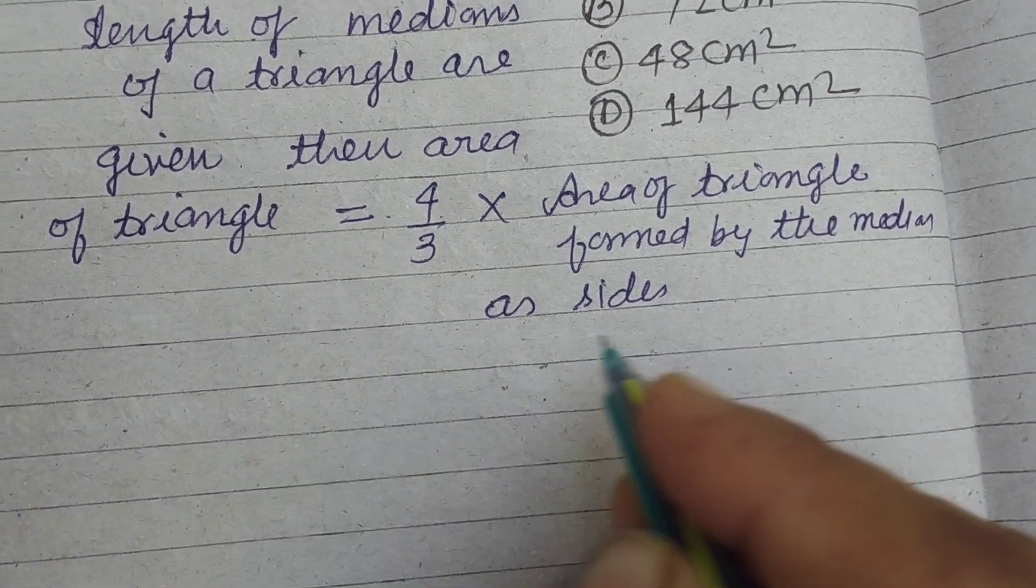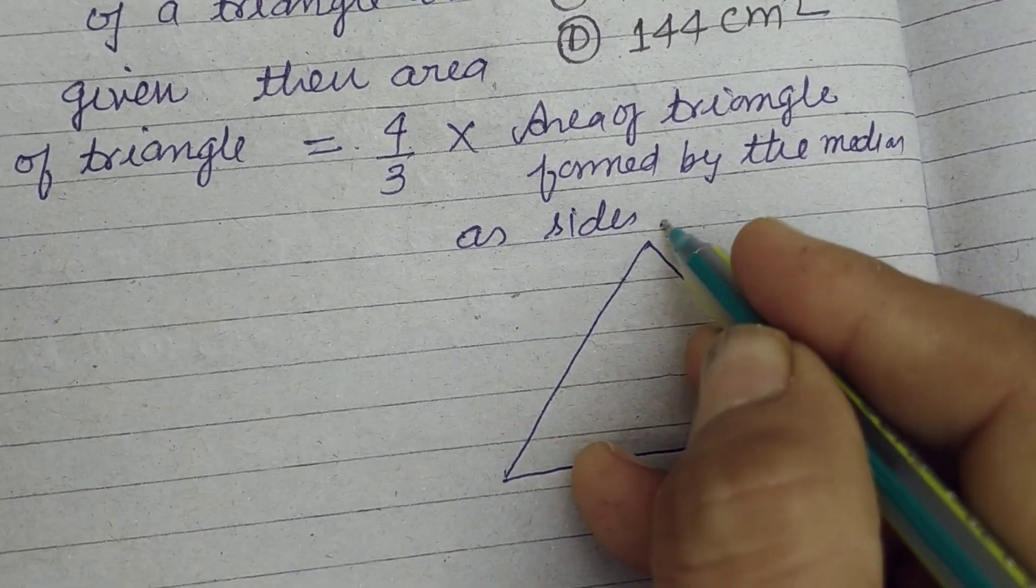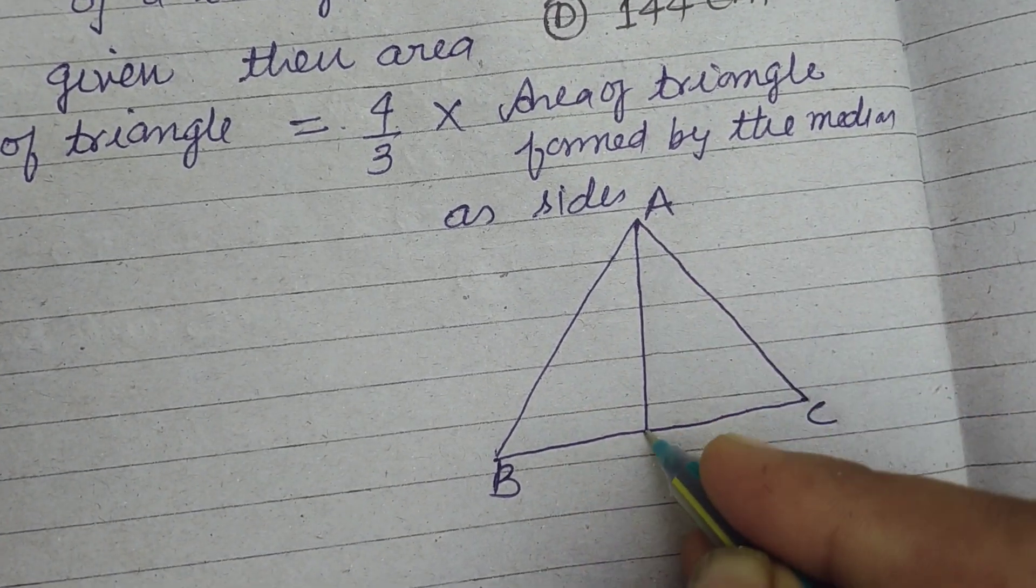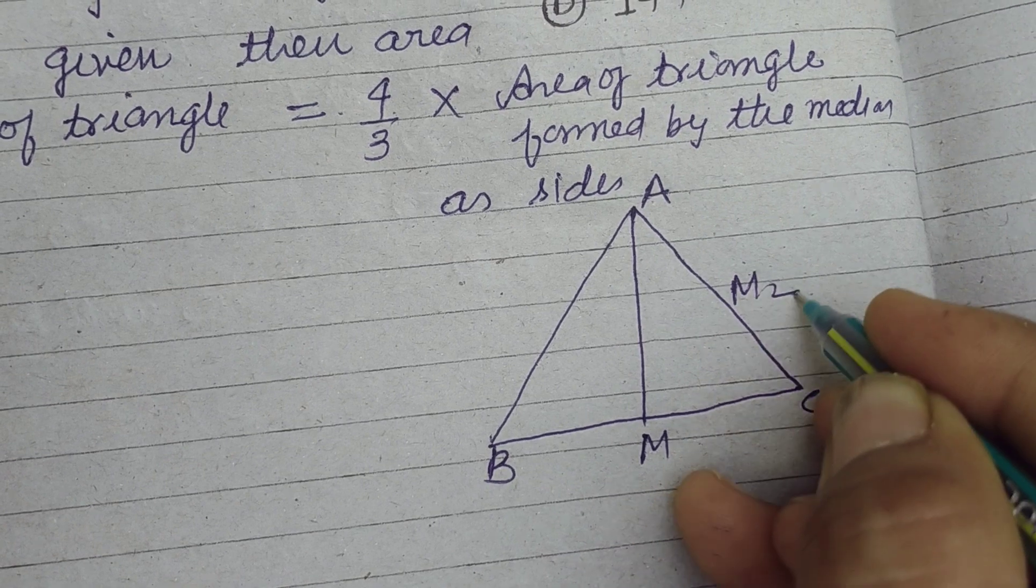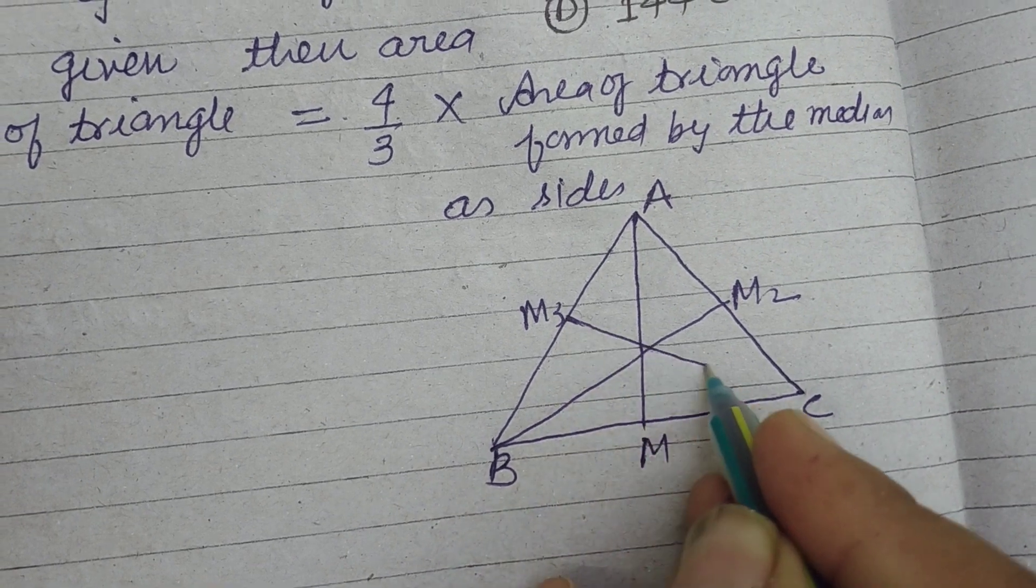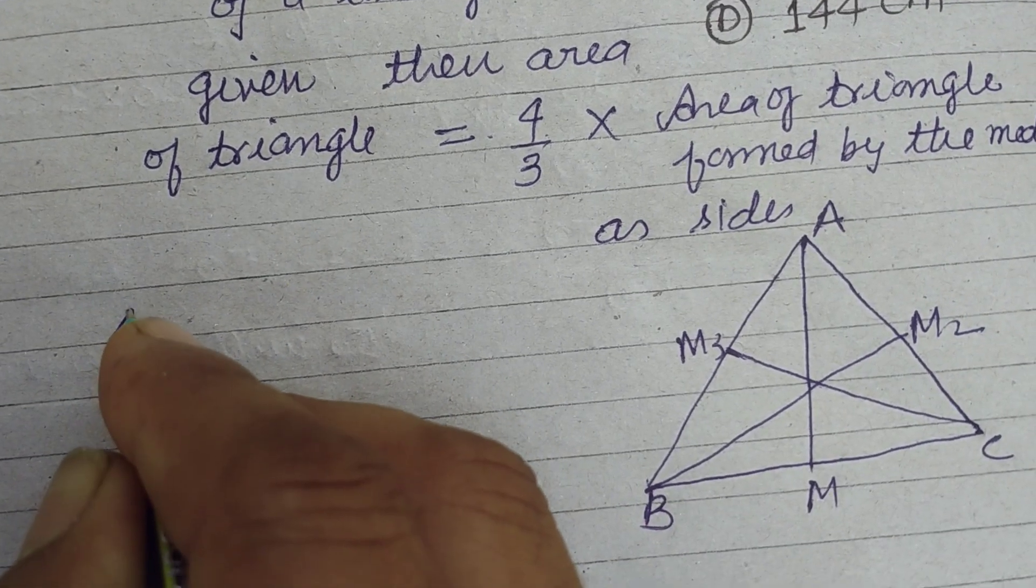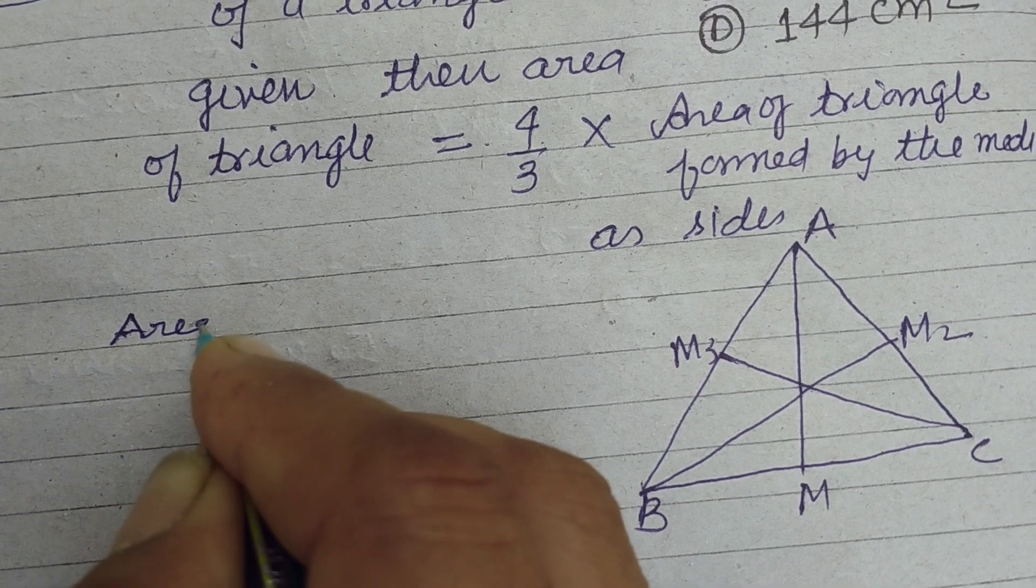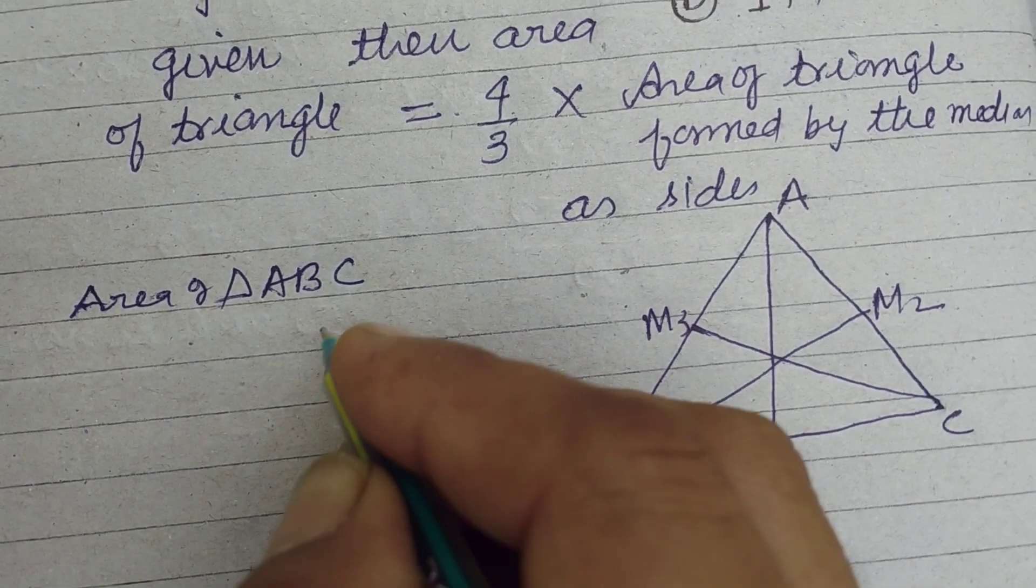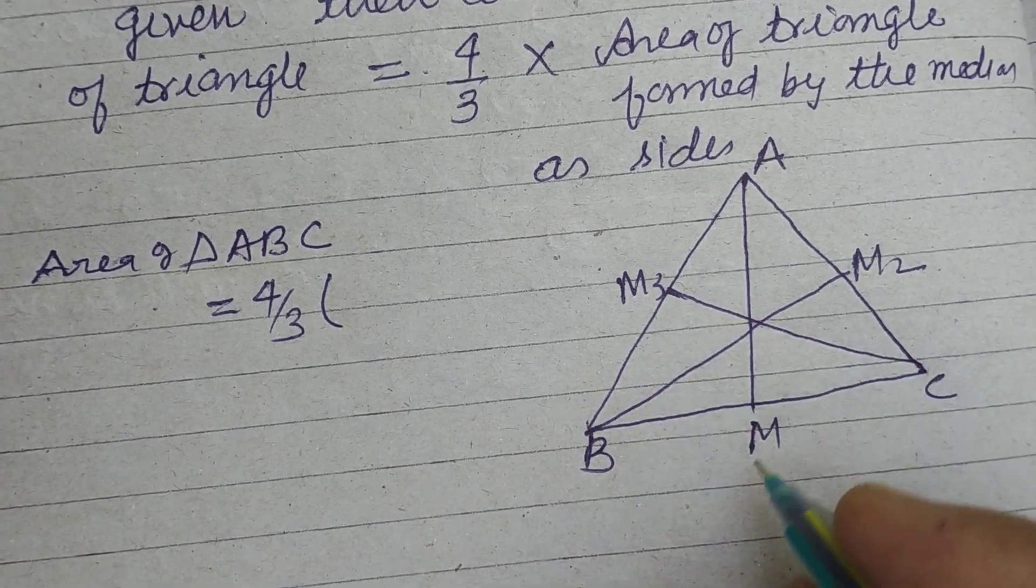So when we take a triangle ABC, this is a triangle ABC whose medians are, this is M1, M2, M3. Medians of a triangle are concurrent. So area of triangle ABC equal to 4 by 3 area of triangle formed by these sides.